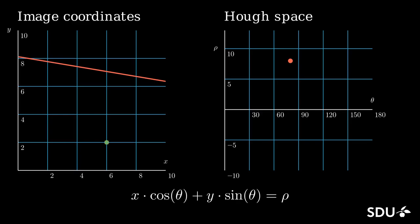Now we would like to take a look at two points that we add to the image coordinates and the associated curves in the Hough space. These two curves intersect at a certain point, and that point is exactly the line that connects the two points in the image coordinates.